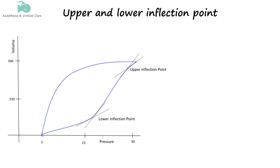The lower inflection point marks the pressure where alveoli begin to open or recruit during inflation. Before this point, the lungs are less compliant or stiff because many alveoli are still collapsed. The lower inflection point guides clinicians to set the minimum pressure — such as positive end-expiratory pressure — needed to keep alveoli open and prevent collapse during breathing. It is recommended to set PEEP above this point to avoid alveolar collapse.